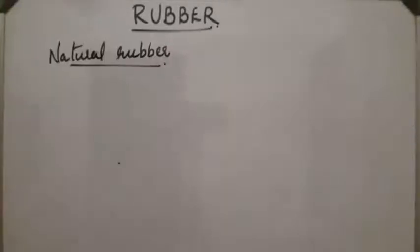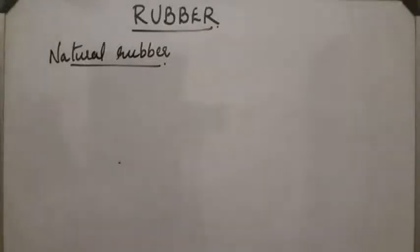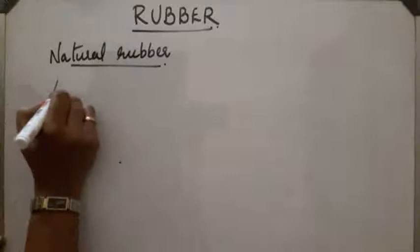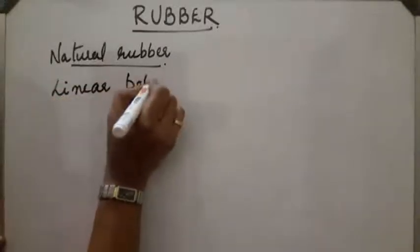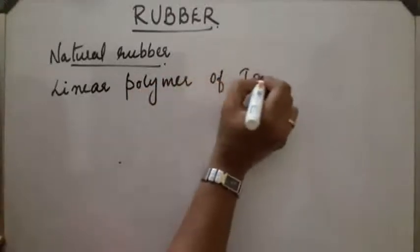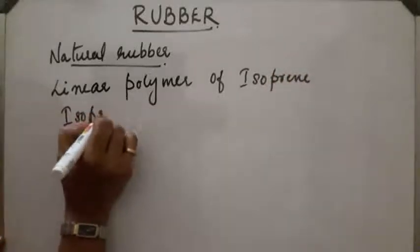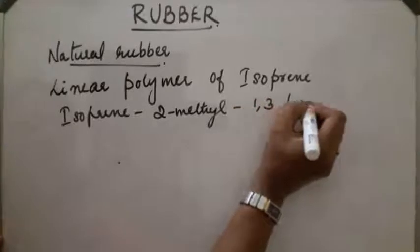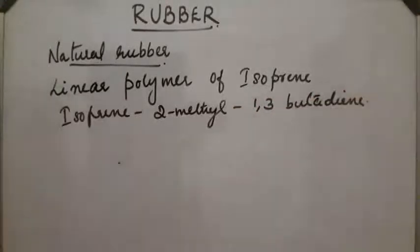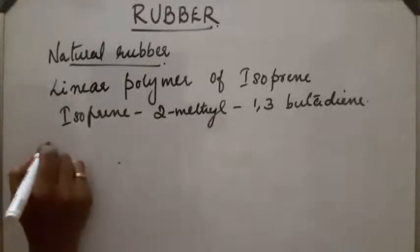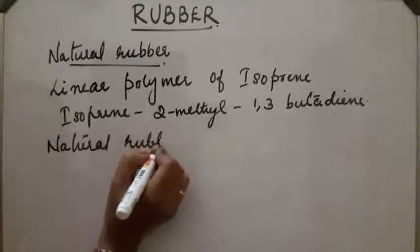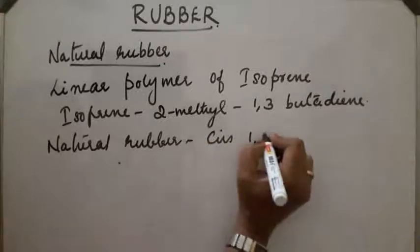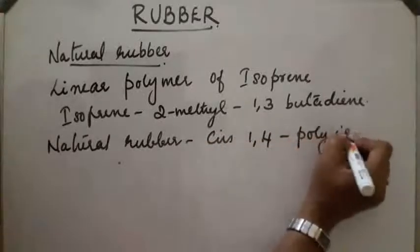First, let us discuss natural rubber. Natural rubber is a naturally occurring polymer having elastic properties, and it is obtained from the latex of rubber trees. It is a linear polymer of isoprene — specifically, it is cis-1,4 polyisoprene.